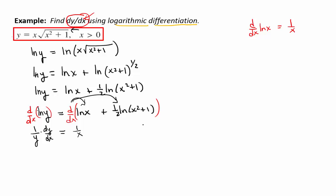What's it going to be? The 1 half stays the same times 1 over what? x squared plus 1, right? We just apply this rule, but since that wasn't an x, times the derivative of x squared plus 1. It's the chain rule.